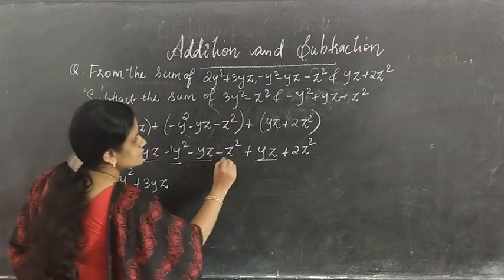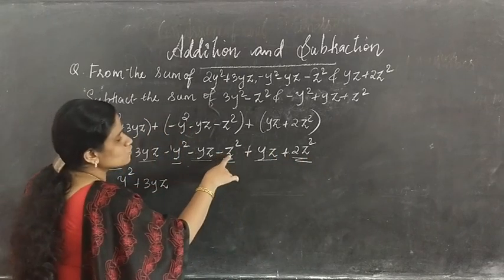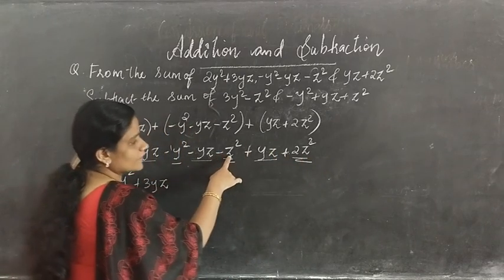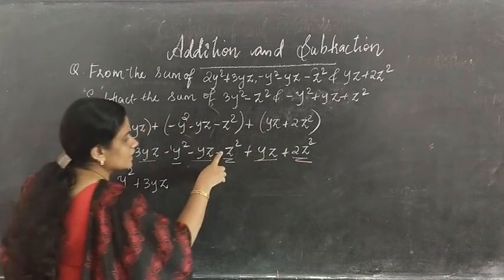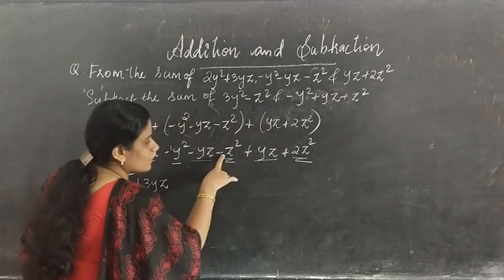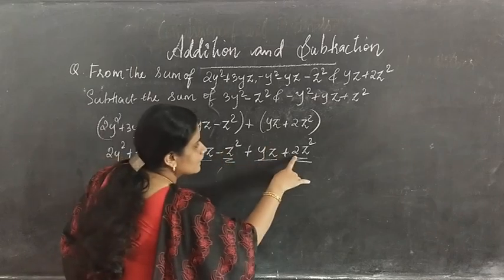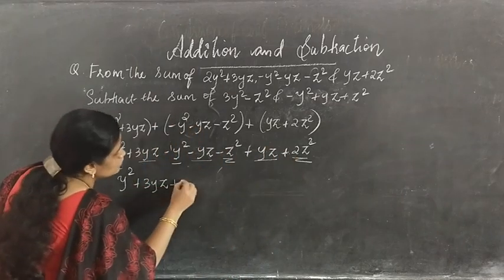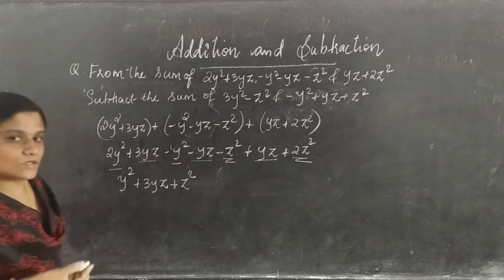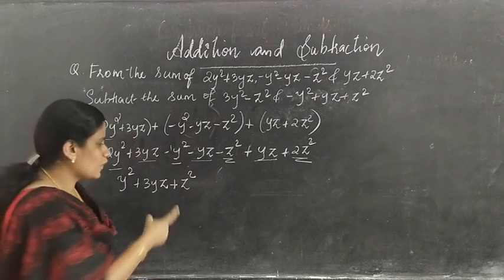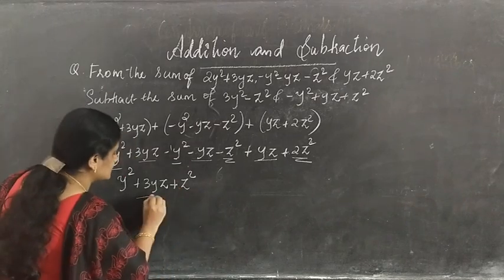The remaining term is z²: minus 1z² plus 2z², so minus 1 plus 2 gives plus 1z², written as z². If the coefficient is 1, you don't need to mention it. So this is the first sum: y² plus 3yz plus z².